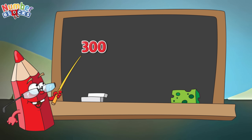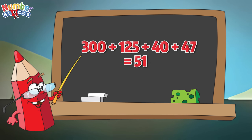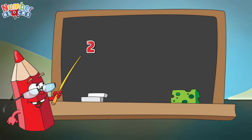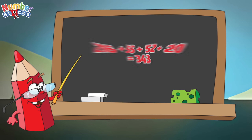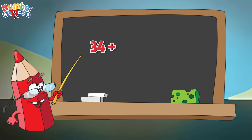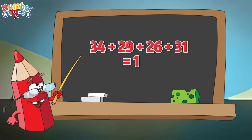300 plus 125 plus 40 plus 47 is equals to 512! 216 plus 55 plus 52 plus 20 is equals to 343! 34 plus 29 plus 26 plus 31 is equals to 120!